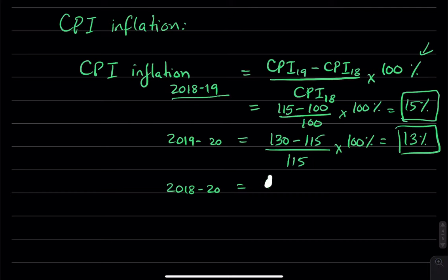And lastly, the inflation rate between 2018 and 2020, would be 130 minus 100, divided by 100, times 100 percent, which is equal to 30 percent. So we have our answers.